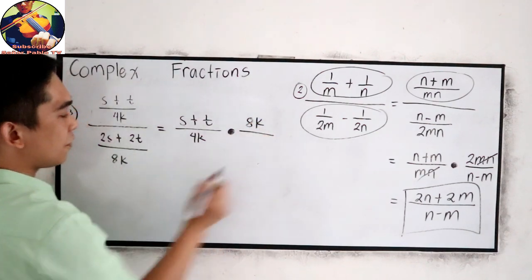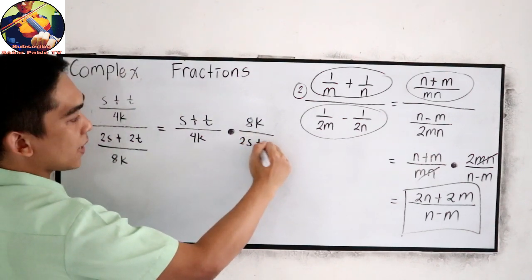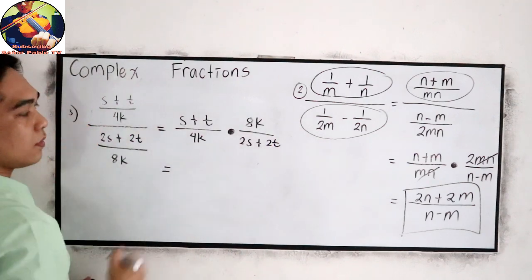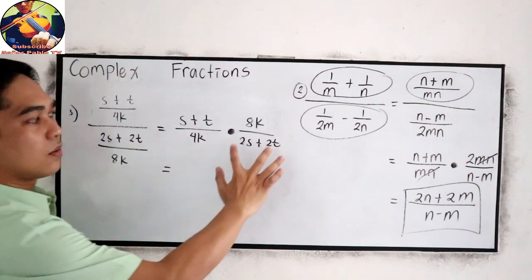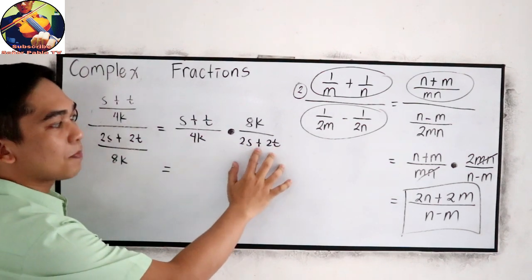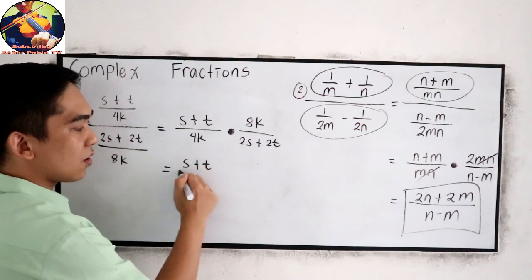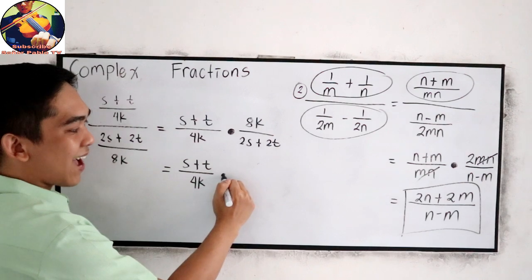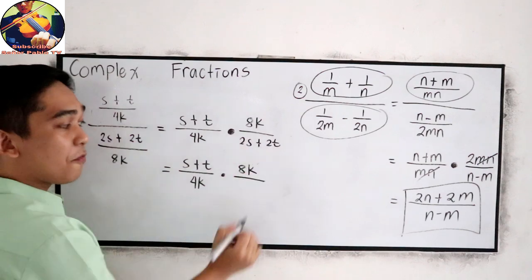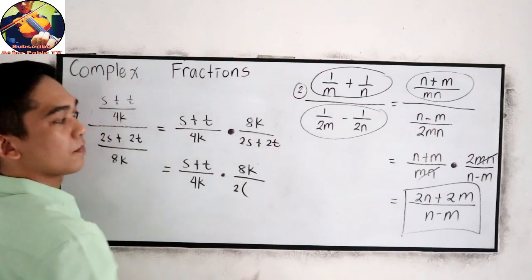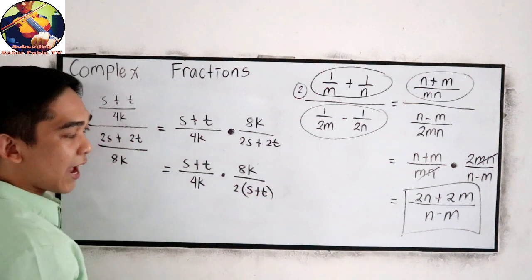Get the reciprocal of the denominator. So 8k all over 2s plus 2t. Now, let's factor 2s plus 2t. So we just copy s plus t all over 4k times 8k all over. Our common factor is 2. Now we have s plus t. Let's check. 2 times s, 2s.